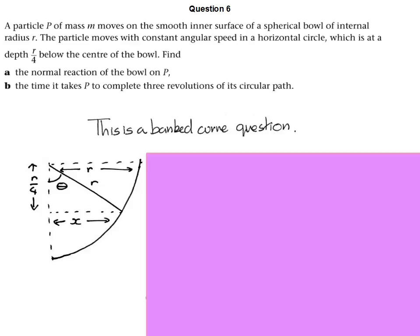Here is my diagram. I have the section of the sphere that I'm thinking about, I've marked on the radius, I've marked on how far below the centre of the circle we are, and I've called the actual radius of the circular motion x. I've also marked on the diagram the angle theta, which I'm going to need to know as part of the question. Calculating this is just going to involve Pythagoras and a little bit of basic trigonometry.